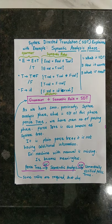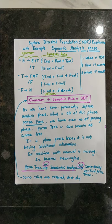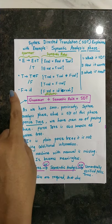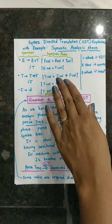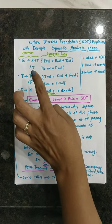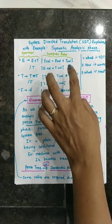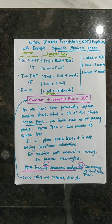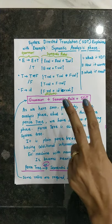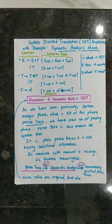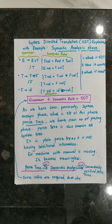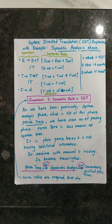Grammar plus semantic rules is nothing but Syntax Directed Translation, or SDT. Here you can see a grammar — the same grammar we worked with in the previous video — and these are the semantic rules. For example, E.val = E.val + T.val, and E.val = T.val. E has two production rules: E → E plus T, and E → T. These semantic rules define the meaning of each grammar production.